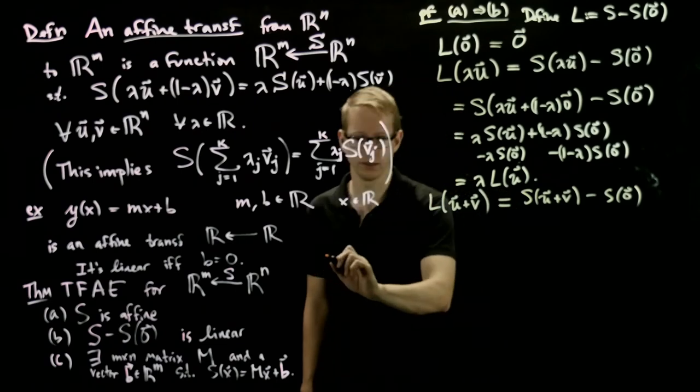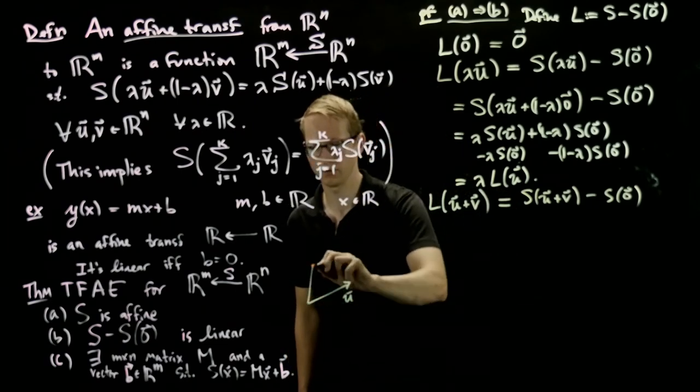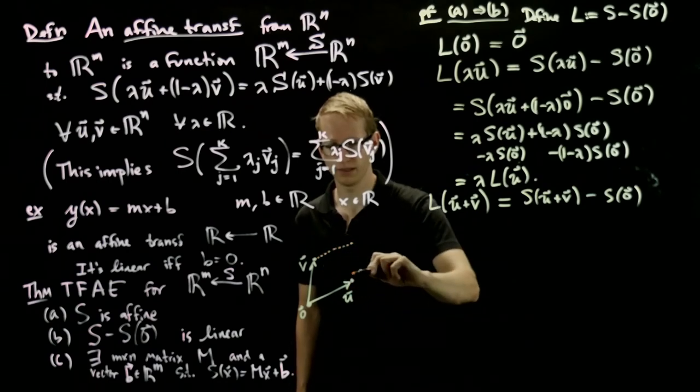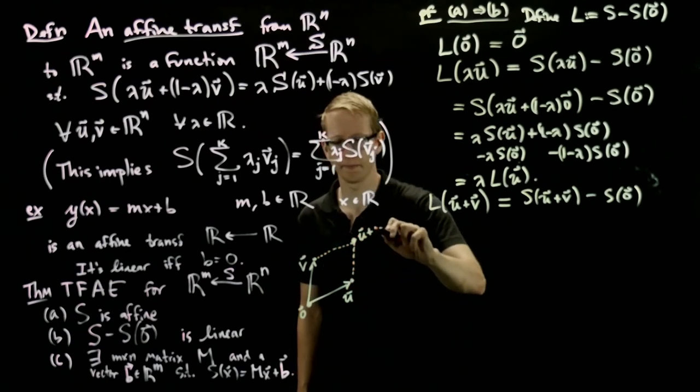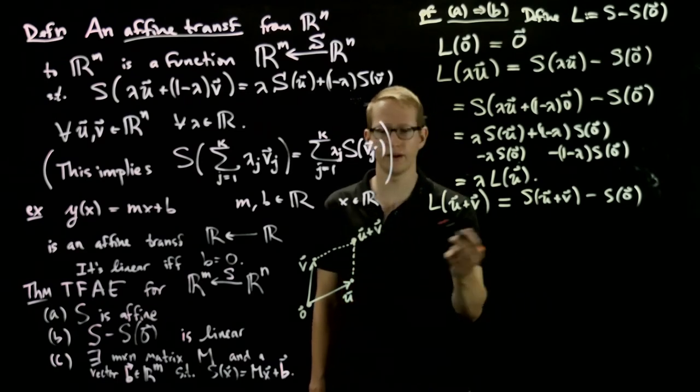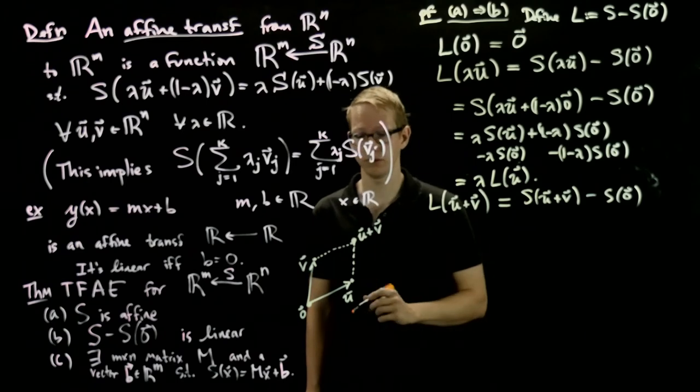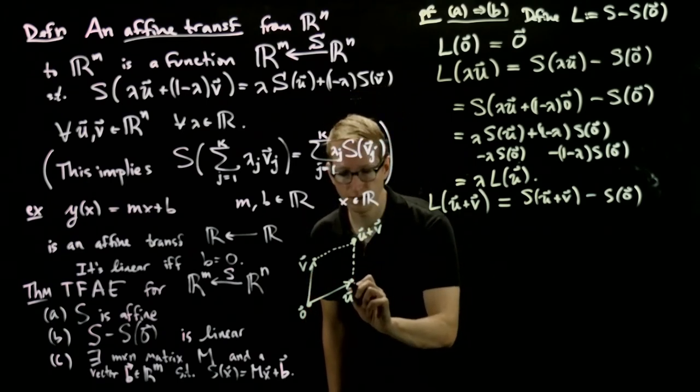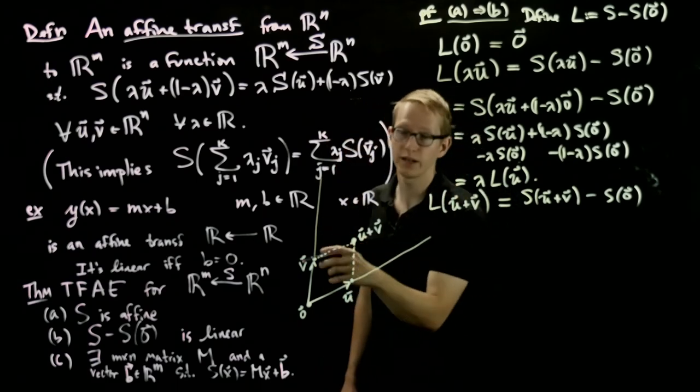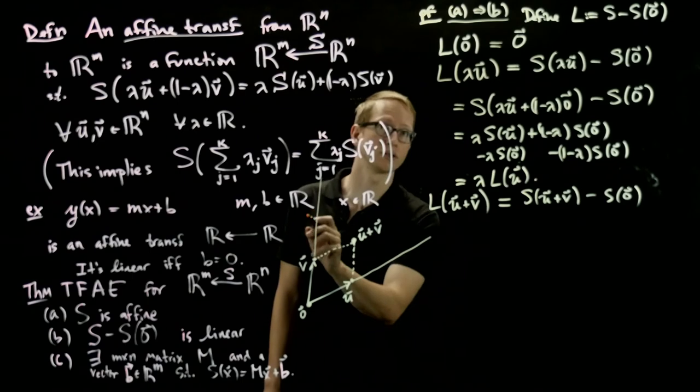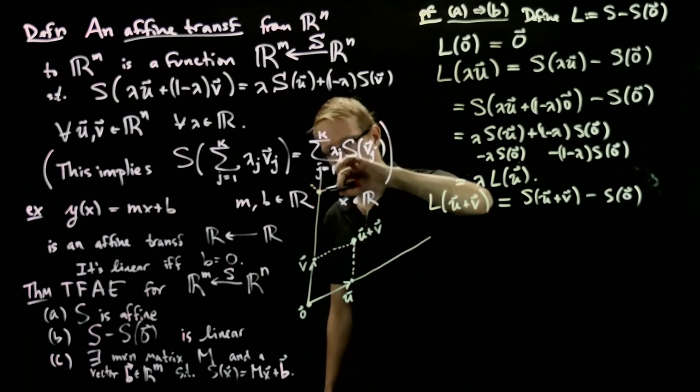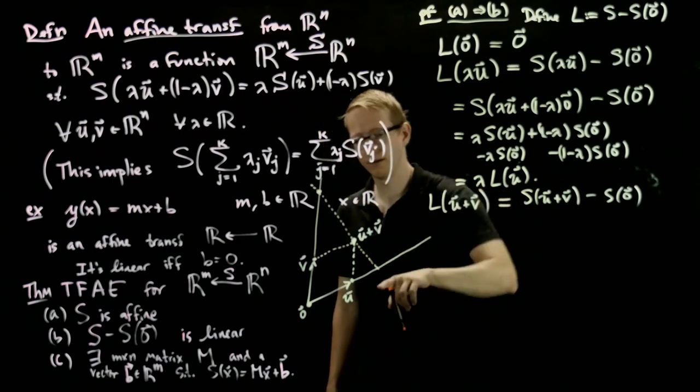Now let's draw a picture because this is going to help. Let's say we have the vector u here and the vector v here. And this is the 0 vector. Now the vector u + v is somewhere here. Now can we express u + v as some convenient affine combination of vectors for which we know what s does? Well, if we extend u and take combinations of v, then u + v can be written as an affine combination of some multiple of u and some multiple of v. In fact, it can be written like that in many ways.